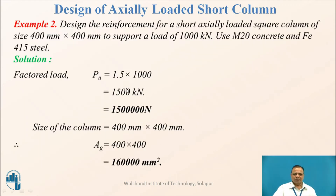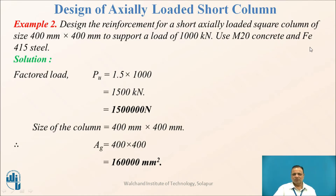Let us deal with one more design example, which is slightly different from the previous one. Design reinforcement for a short axially loaded square column of size 400 mm × 400 mm to support a load of 1000 kilonewtons. Use M20 concrete and Fe415 steel. Pu = 1.5 × 1000 = 1500 kilonewtons = 1500 × 10³ N.